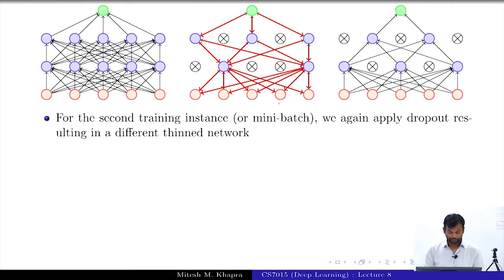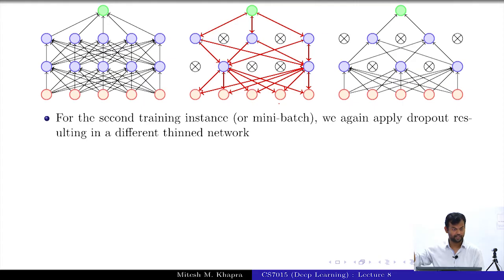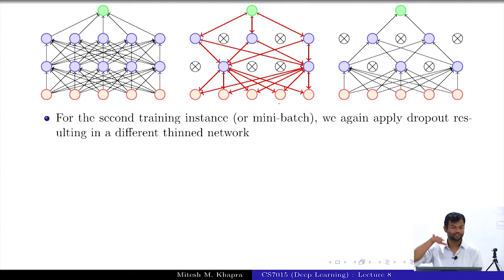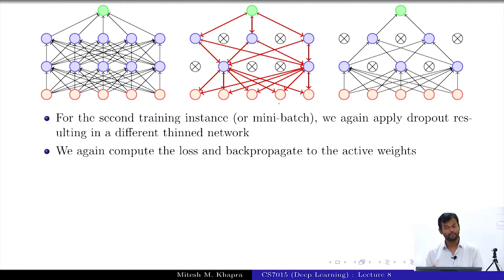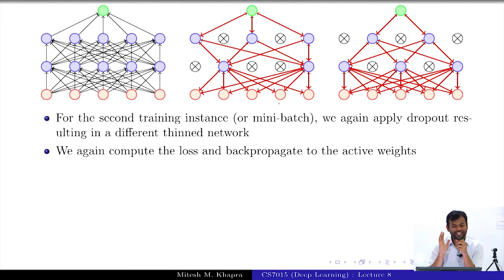For the second instance, we apply dropout again and naturally get a different thin network. We do forward propagation, compute the loss, and back-propagate only to the active nodes in that network.